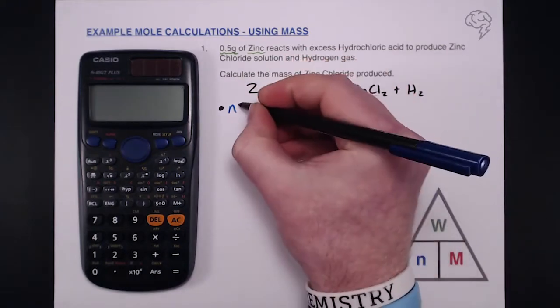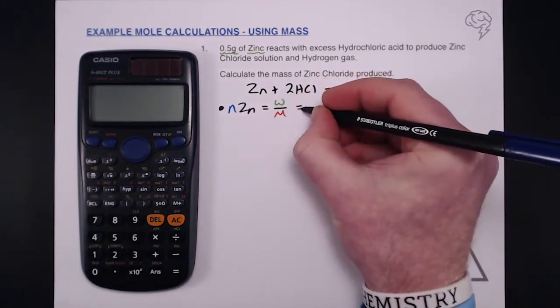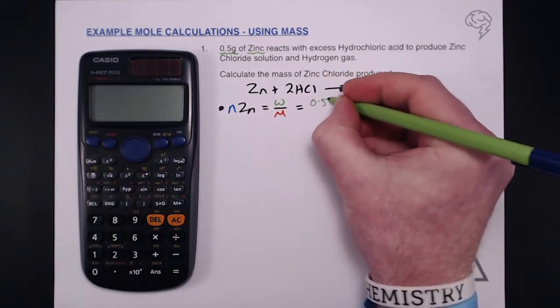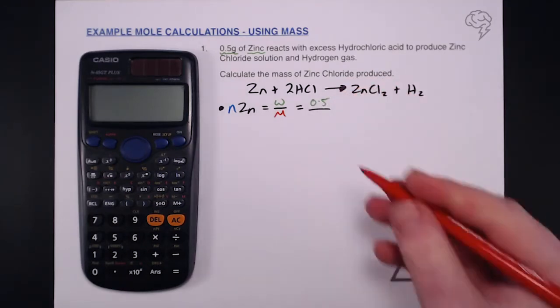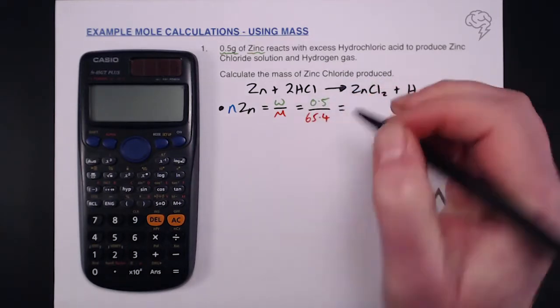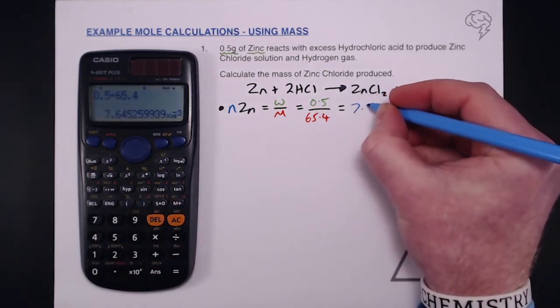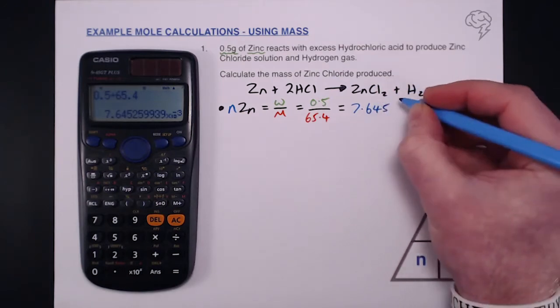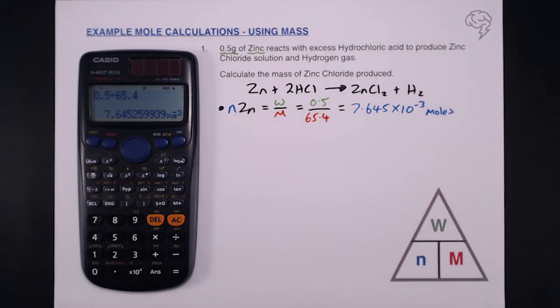That is our mass divided by molar mass. So that equals our mass which is 0.5, and if we look in our periodic table the molar mass for zinc is 65.4 grams per mole. Let's figure out what that is. 0.5 divided by 65.4, and that gives us in decimals...